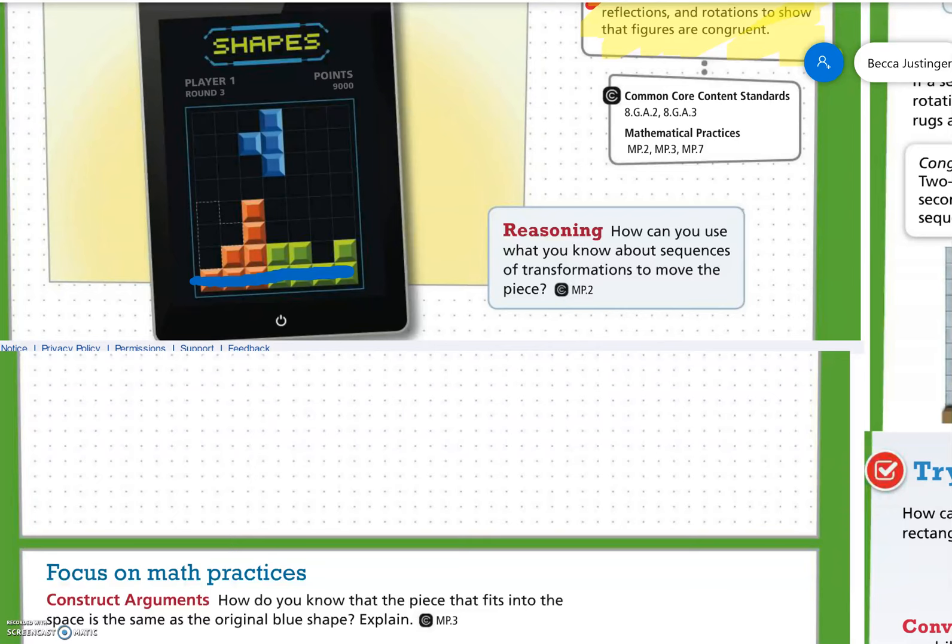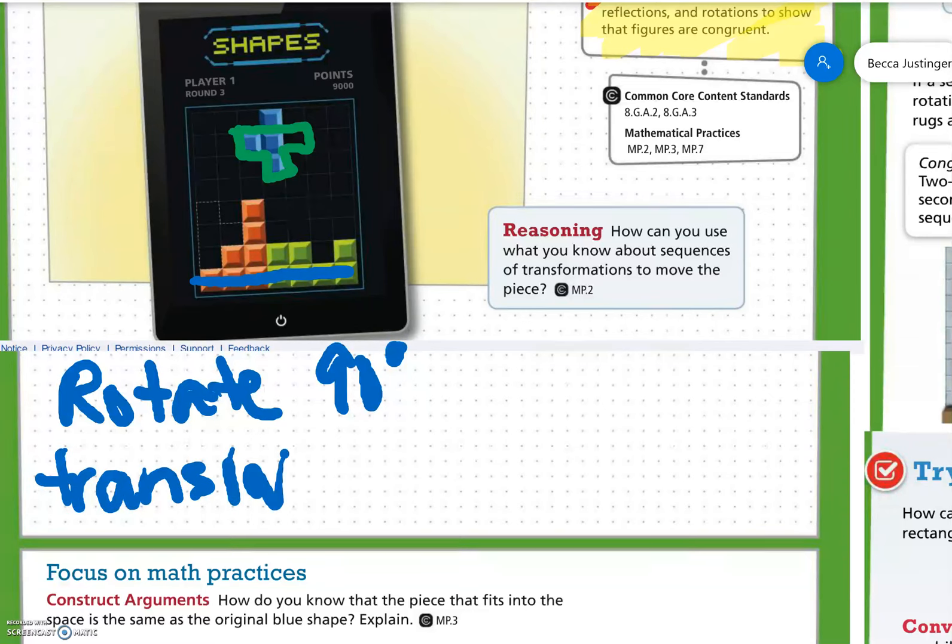Okay, my thought was Simone could rotate it 90 degrees so that it would look like this. And then if she moved it, so rotate 90 degrees. And then if she moved it, translate, let's work on those words. Even I need to, instead of move, translate 2 to the right.